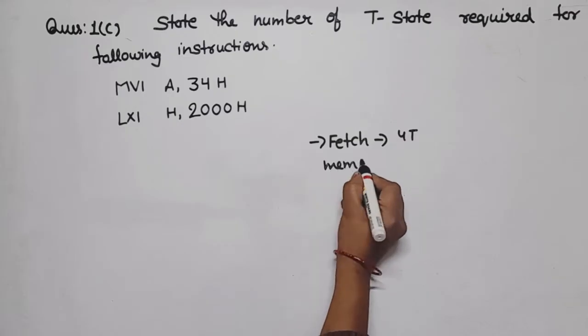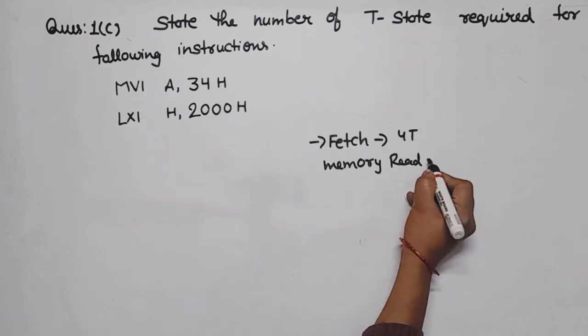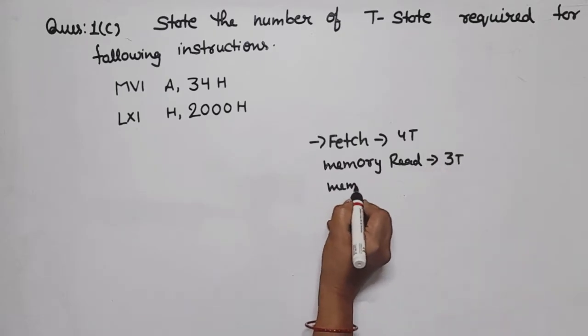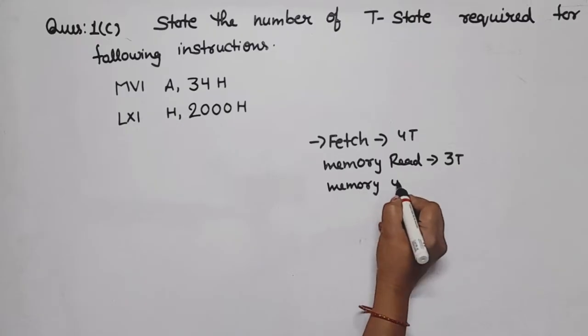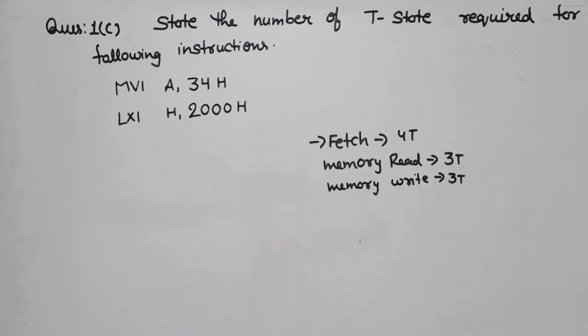Then memory read and read operation, memory read takes 3T. Same way, memory write takes 3T. So these three machine cycles we have to use for any instruction.